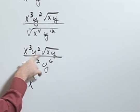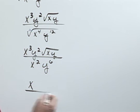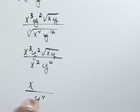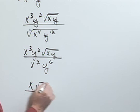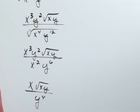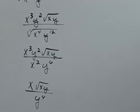Y squared on top over y to the sixth on bottom, I'll have a y to the fourth on the denominator, and then I still have my square root of x y. So x times the square root of x y all over y to the fourth.